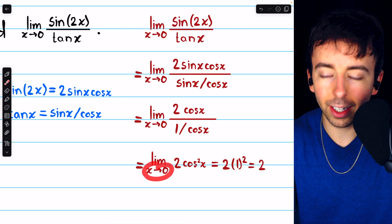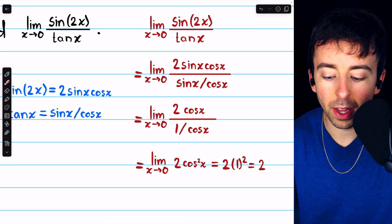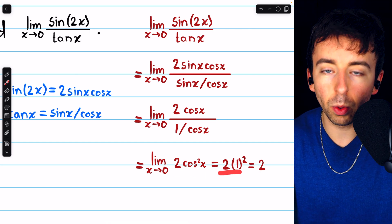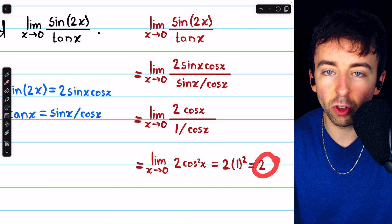And at this point, we can plug in x equals zero. 2 times cosine squared of zero is 2 times 1 squared, which of course is just 2.